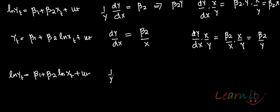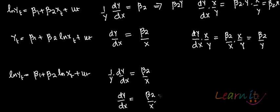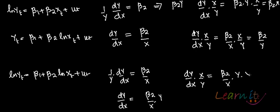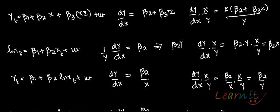For the log-log model, you have log(yt) = β1 + β2*log(xt) + ut. Differentiating gives (1/y)*(dy/dx) = β2/x, so dy/dx = β2*(y/x). Elasticity is (dy/dx)*(x/y), which is (β2*y/x)*(x/y), which is just β2. So these are important elasticities — you have to keep them in mind.